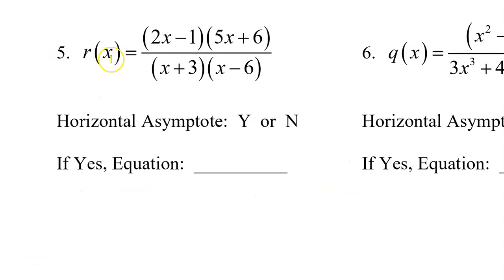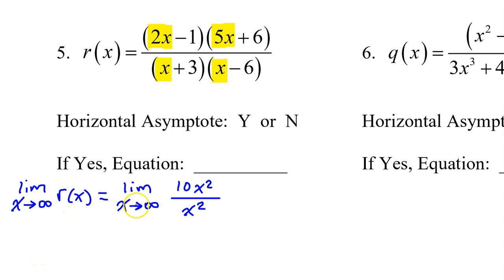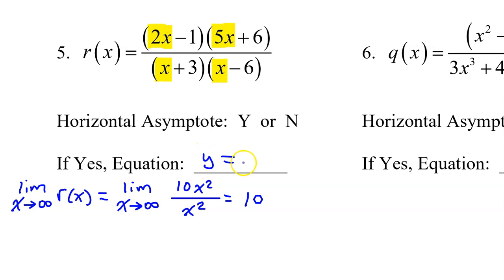For number 5, we are given r of x in factored form, so we should look at the leading term of each factor to figure out the end behavior. The right end behavior of r of x will be the limit as x approaches infinity of 10x squared over x squared, because 2x times 5x is 10x squared, and x times x is x squared. At this point, the x squared cancels out, and we are left with the limit of 10. So there is a horizontal asymptote, and it is y equals 10.